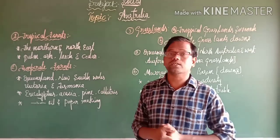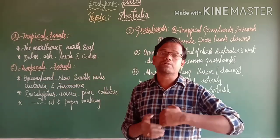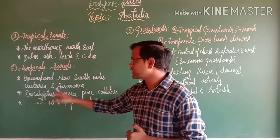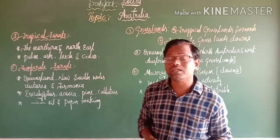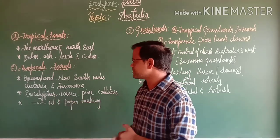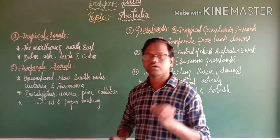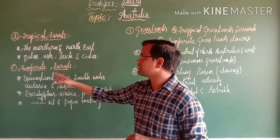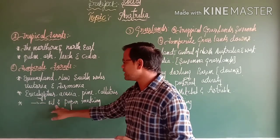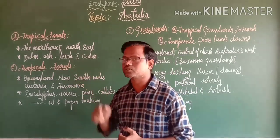The second natural vegetation is temperate forest, found in Queensland, New South Wales, Victoria, and Tasmania. The important trees include eucalyptus, acacia, pine, and coal trees. Especially eucalyptus is used for oil and paper making.